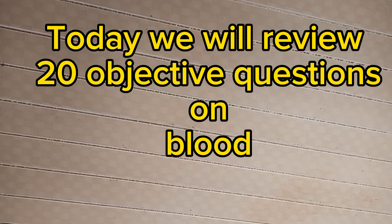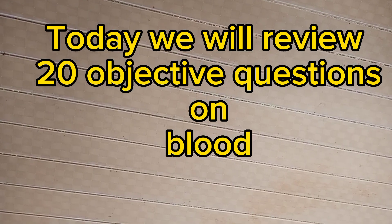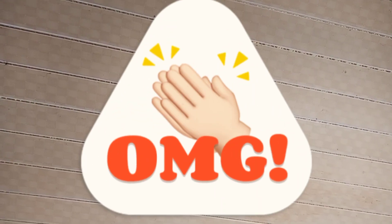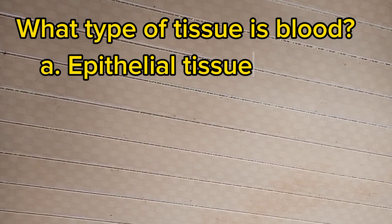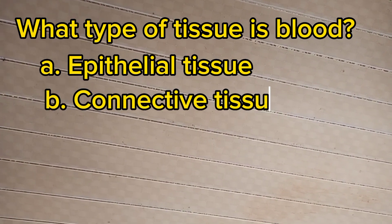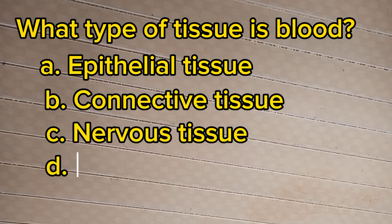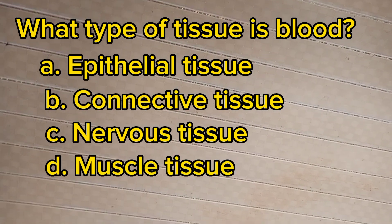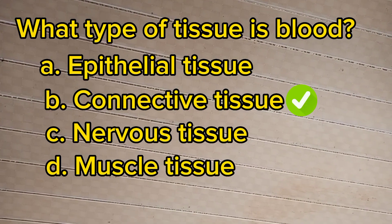Hey guys, today we will review 20 objective questions on blood, and this is just part one. Number one: What type of tissue is blood? A. Epithelial tissue, B. Connective tissue, C. Nervous tissue, D. Muscle tissue. The answer is B, connective tissue.